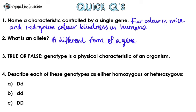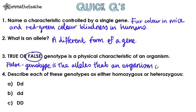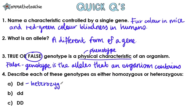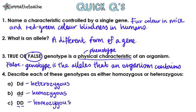Number three — true or false: genotype is a physical characteristic of an organism. This is false. Genotype is just the alleles that an organism contains. If we're talking about physical characteristics, we mean phenotype. And number four: describe each of these genotypes as homozygous or heterozygous. A is heterozygous because they're different. B is homozygous because they're both little d's. And C is also homozygous because they're both big D's.